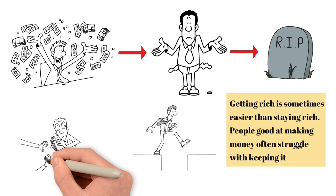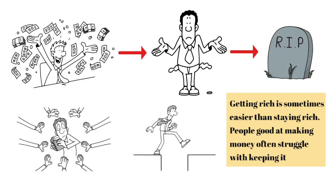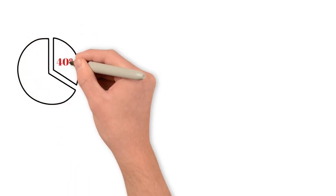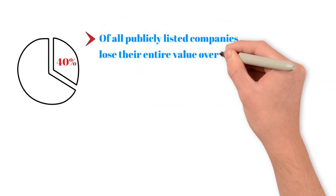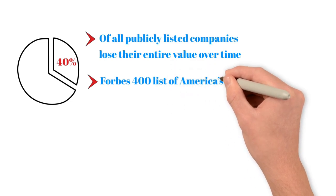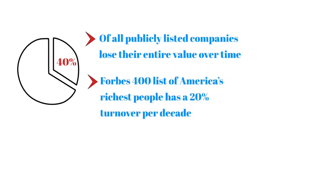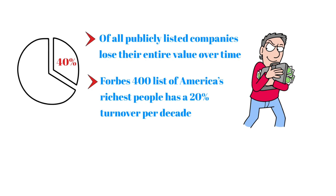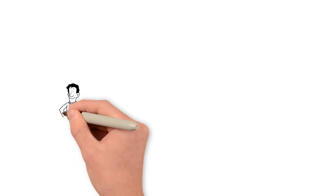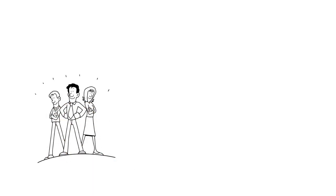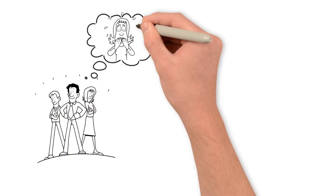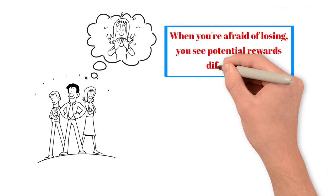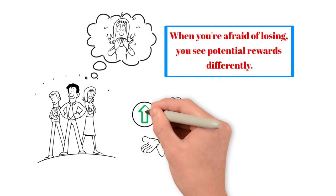There are lots of Livermores out there, though their stories aren't usually as tragic. Around 40% of all publicly listed companies lose their entire value over time. And the Forbes 400 list of America's richest people has a 20% turnover per decade, excluding cases of death and intrafamily transfers. So how do you keep what you already have? In one word, perseverance. The entrepreneurs who do best stick around for a long time without wiping out. What they all have in common is a little thing called fear. According to billionaire venture capitalist Michael Moritz, when you're afraid of losing, you see potential rewards differently.